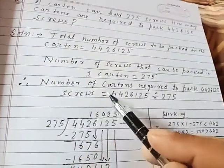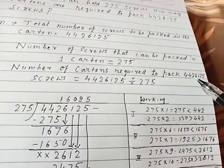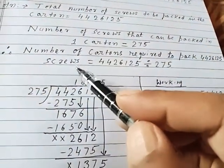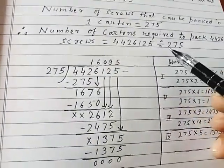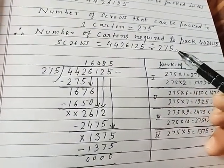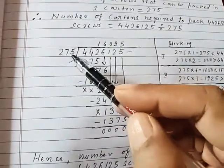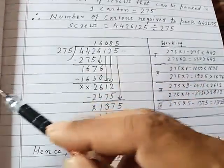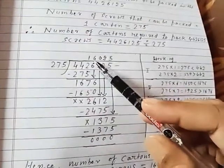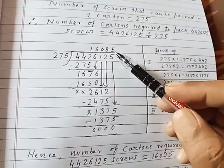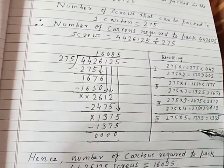Therefore, number of cartons required to pack 4426125 screws will be equal to 4426125 divided by 275. Now dividing 4426125 by 275 using the same process as we have done in previous example, we will get our quotient as 16095. The working rule is shown here. Hence, number of cartons required to pack 4426125 screws is equal to 16095.